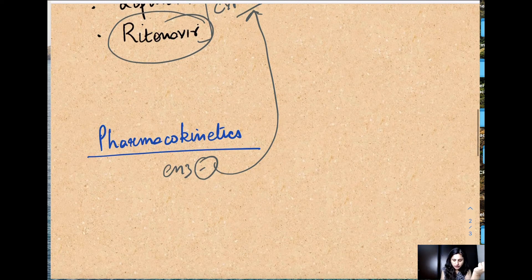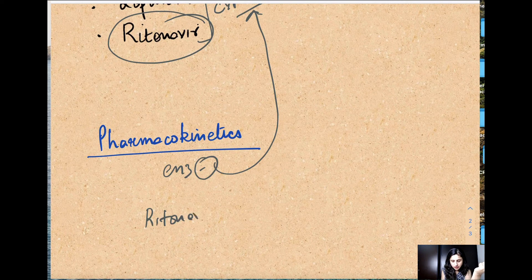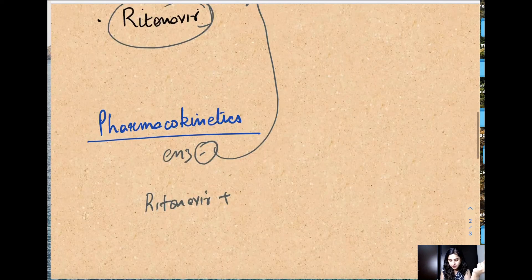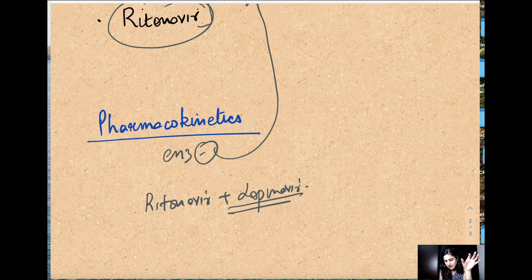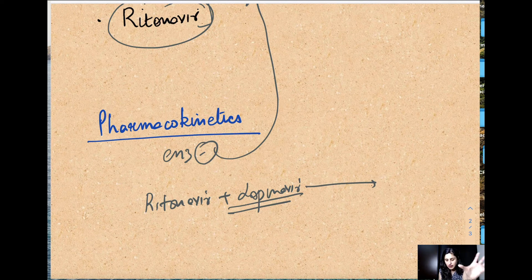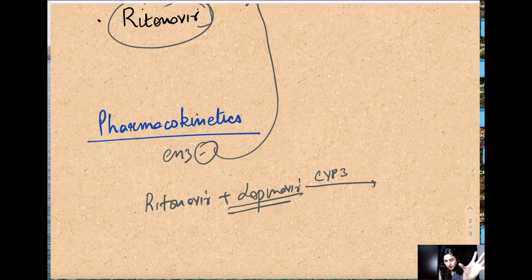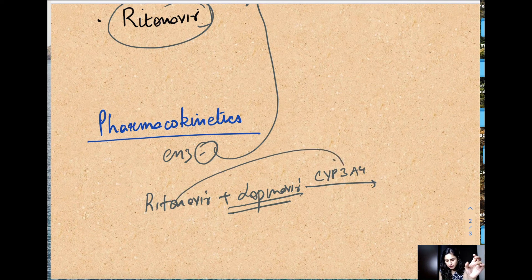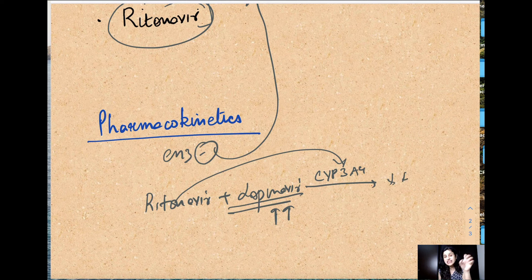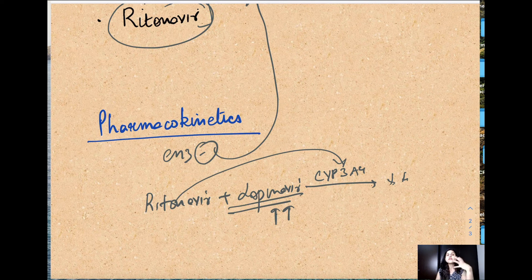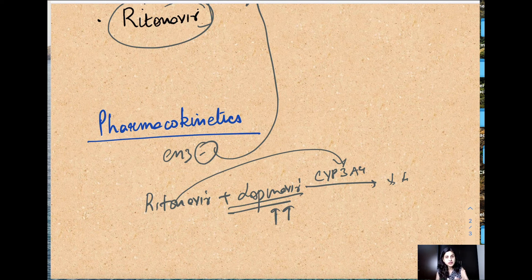So if you give ritonavir along with other drugs like lopinavir, what happens? Lopinavir is given in a particular dose, it will have its protease inhibitor mechanism of action. But because it's getting metabolized by CYP3A4, ritonavir is going to inhibit it because it's a very strong inhibitor. So its metabolism won't occur that much, so it'll metabolize slowly and be there in the body for a long period of time.